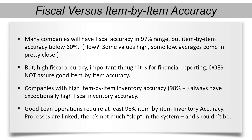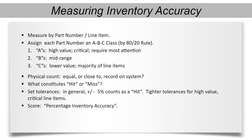Here's how to measure accuracy. We agreed that item-by-item measurement of accuracy is needed. Now let's define how you will measure accuracy. If accurate means that the computer records match exactly the physical quantities on hand, then even the best manufacturing companies will have very low accuracy or zero. Fortunately, this is not how you will measure accuracy.